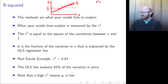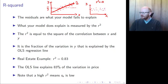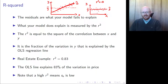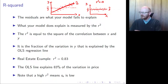If R-squared is zero, then your slope is basically the same as using the average — you do not get any extra value from using the regression line over using the normal model.